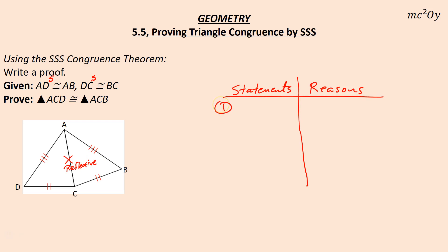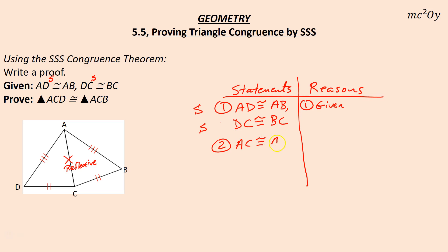Let's go ahead and write that out. Statement one: AD is congruent to AB — that is given. That gives me a side. Statement two, also given: DC is congruent to BC — there's my other side. Number two: AC is congruent to AC. AC is congruent to itself, and I don't have to switch the order of A and C because they fold right on top of each other. That is by the reflexive property.